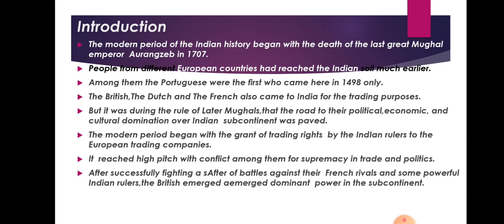Let's begin the introduction. The modern period of Indian history began after the death of the Mughal ruler Aurangzeb in 1707. As explained in the class 7 revision, the Mughal period was divided into two parts. After the death of Aurangzeb, the period of the great Mughals ended, and the period of the later Mughals started. The rulers of the later Mughals were not powerful enough to hold the whole empire, and this was taken advantage of by the European countries. Historians mark the modern period of Indian history as starting from 1707.